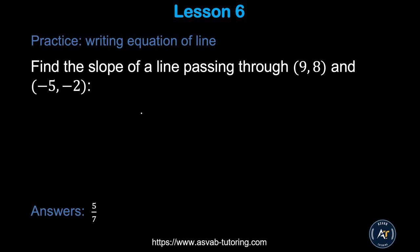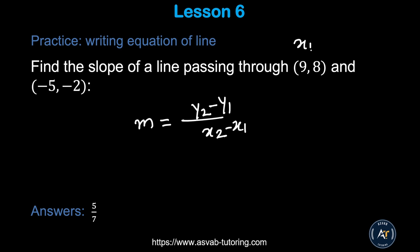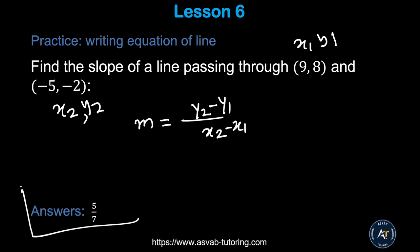Now you try by yourself. Using the formula m = (y2 − y1) / (x2 − x1), label the points x1, y1 and x2, y2, plug in the values, simplify, and make sure you get the correct answer.